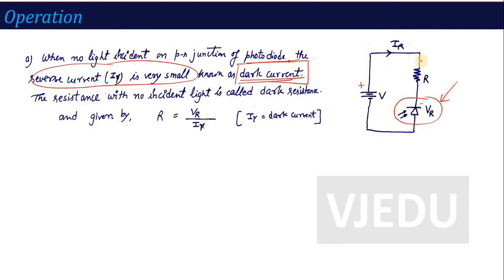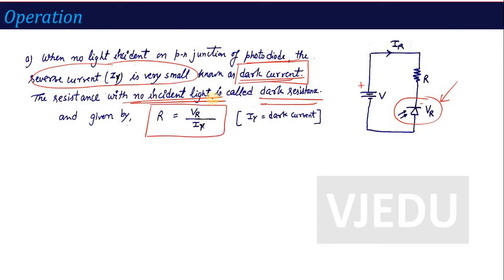At this point, if we calculate resistance, the resistance with no light incident is called the dark resistance, given by R = Vr / Iy, where Vr is the reverse voltage and Iy is the dark current. This is the internal resistance of the photodiode. Photodiode acts as a variable resistor, because when light intensity increases, the current across it increases or decreases, changing its resistance. This ratio Vr upon Iy, where Iy is the dark current, represents the dark resistance.